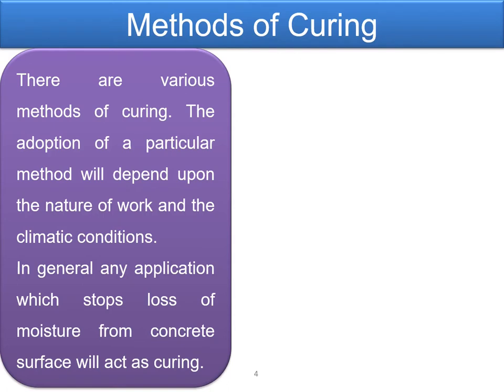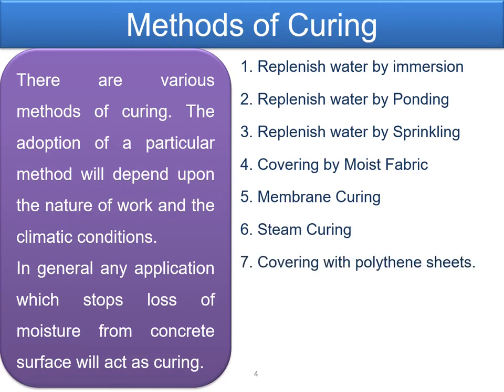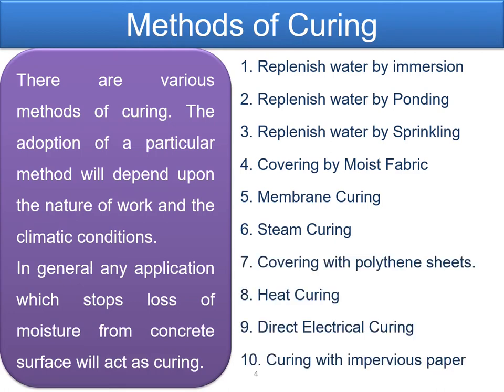There are various methods of curing, and the adoption of a particular method will depend upon the nature of work and the climatic conditions. In general, any application which stops loss of moisture from the concrete surface will act as a curing method. When we talk about different methods, we have water curing, which is further divided into three types: immersion, ponding, and sprinkling — discussed in the first module — and covering with moist fabric.